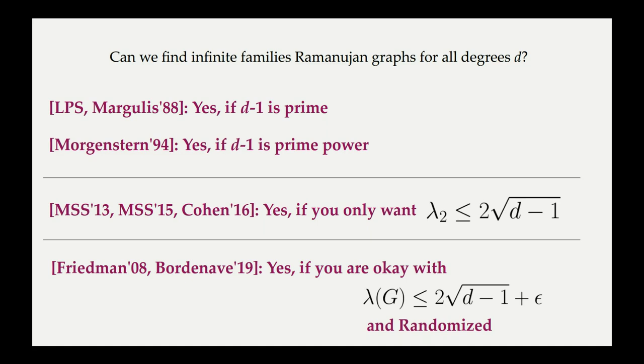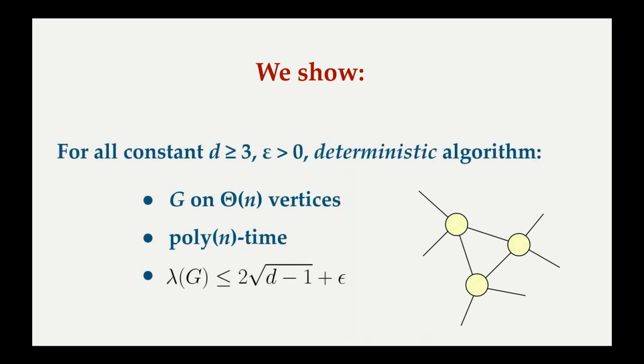We show the following: For all constants d ≥ 3 and ε > 0, there is a deterministic algorithm—and the determinism is key here—that produces a graph G on Θ(n) vertices in poly(n) time, whose spectral expansion is bounded by 2√(d-1) + ε. This is the near-Ramanujan-ness we talked about. Our result is not strongly explicit, but it is probabilistically strongly explicit. We will refer you to our paper for more information on this.